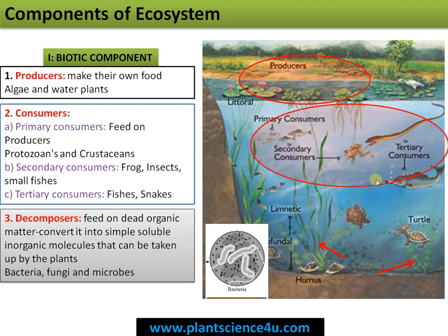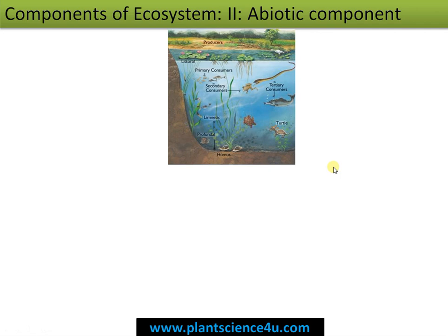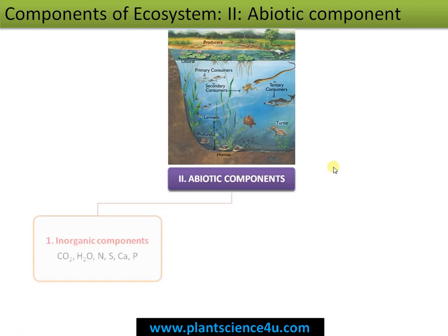Decomposers are actually the recyclers of nutrients. The second component is the abiotic component, or the non-living component of the ecosystem. This includes inorganic components like carbon dioxide, water, nitrogen, sulfur, calcium, and phosphorus — all are nutrients essential for life.